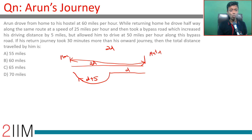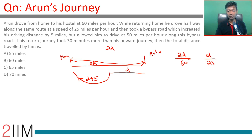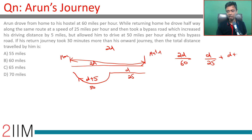While going, assuming that D is in miles, the time taken would have been 2D divided by 60. While returning, the time taken would have been D divided by 25, because he is travelling at 25 miles per hour, plus D plus 5 divided by 50 for the bypass portion. This is the onward journey; this is the return journey.